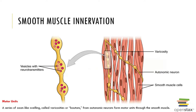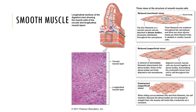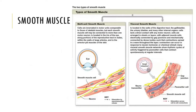Just like all muscles, smooth muscle is also innervated by certain nerves. Here's another look at some different views of the structure of these smooth muscle cells.